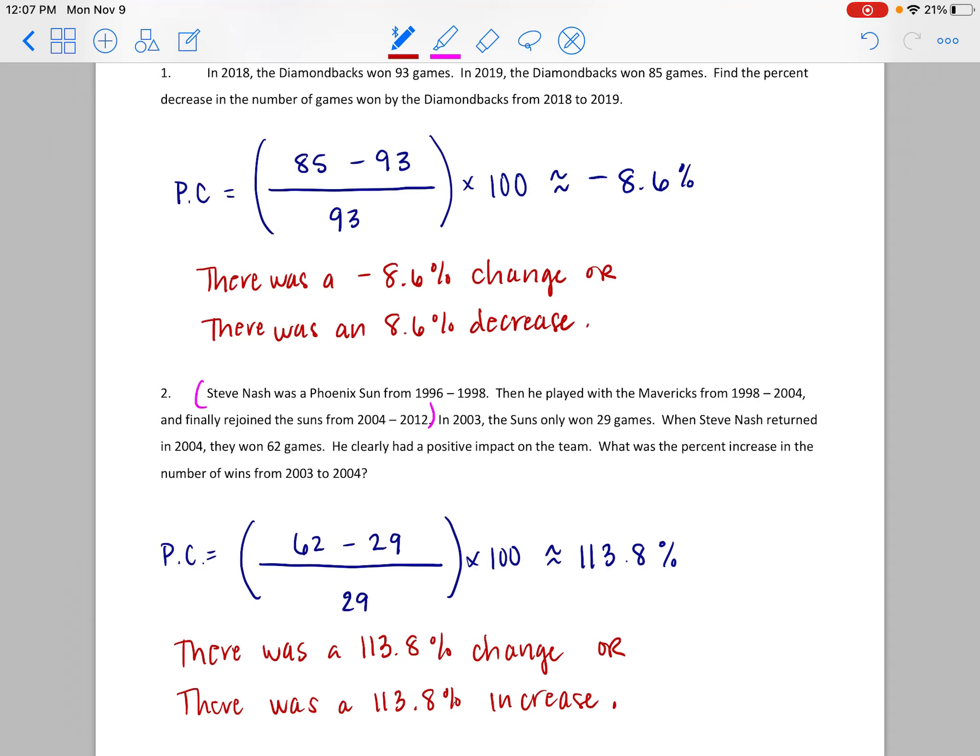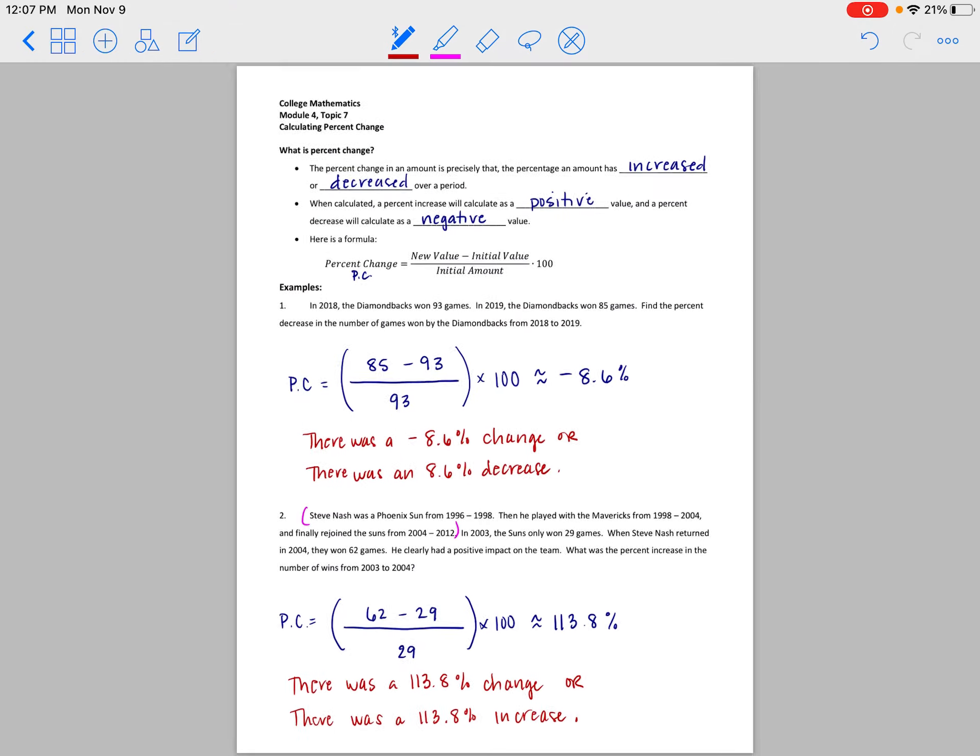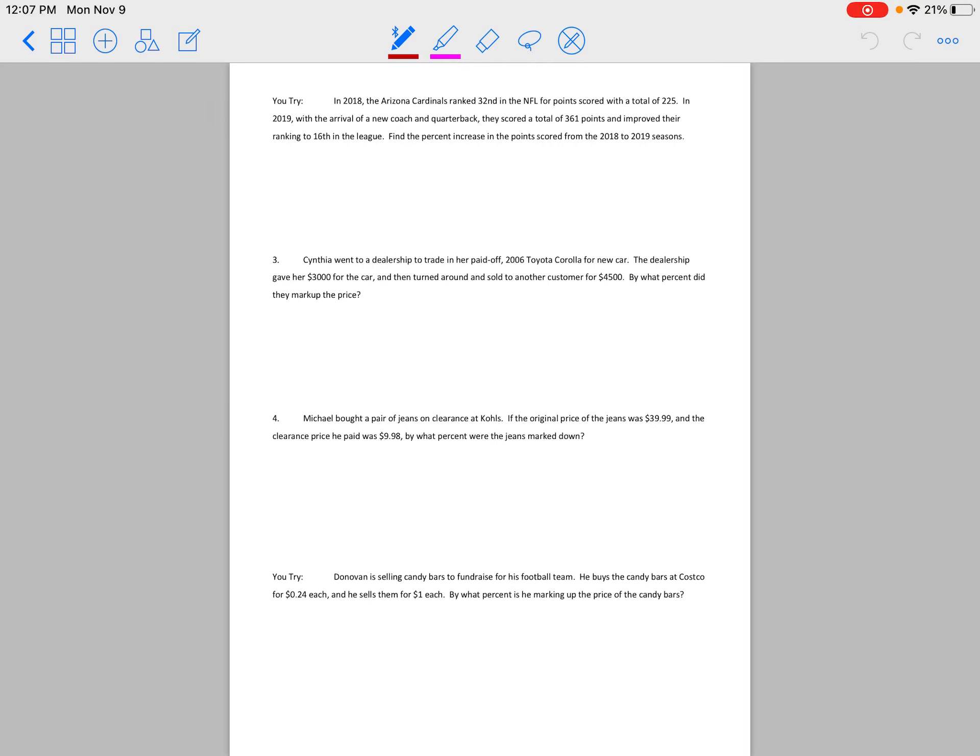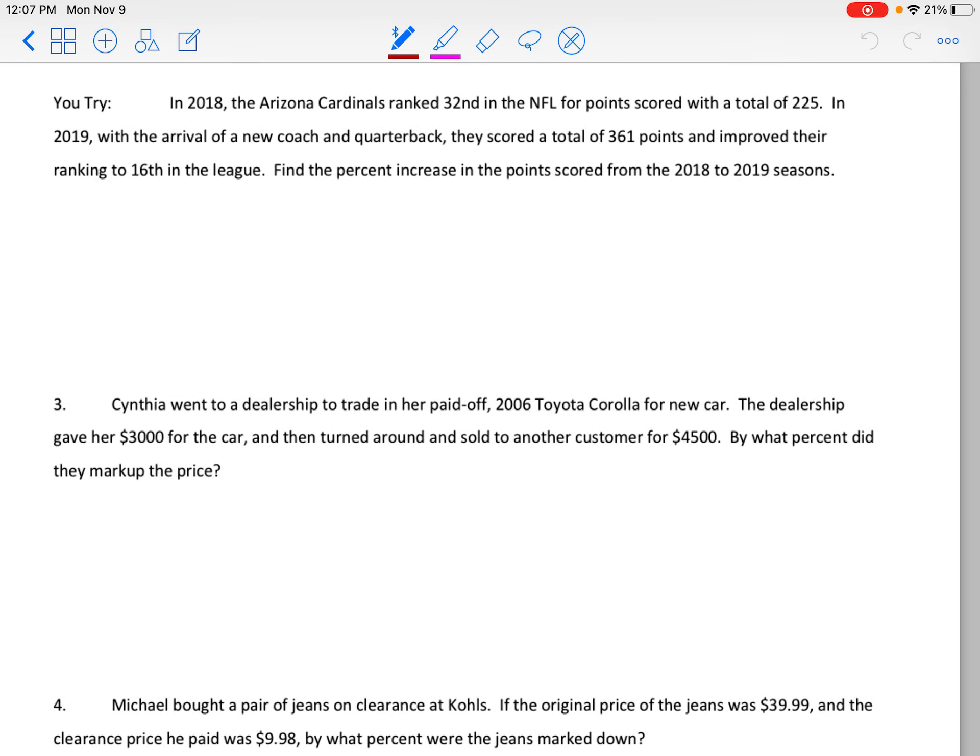So 113.8 percent increase. Over a hundred percent doesn't normally seem like that's possible, but for a percent change it is. That means that in the following season, not only did they get all of the wins they had last time, but they got even more than that. So they exceeded what they had the year before. Good for the Suns, who actually didn't look too bad in this past season.